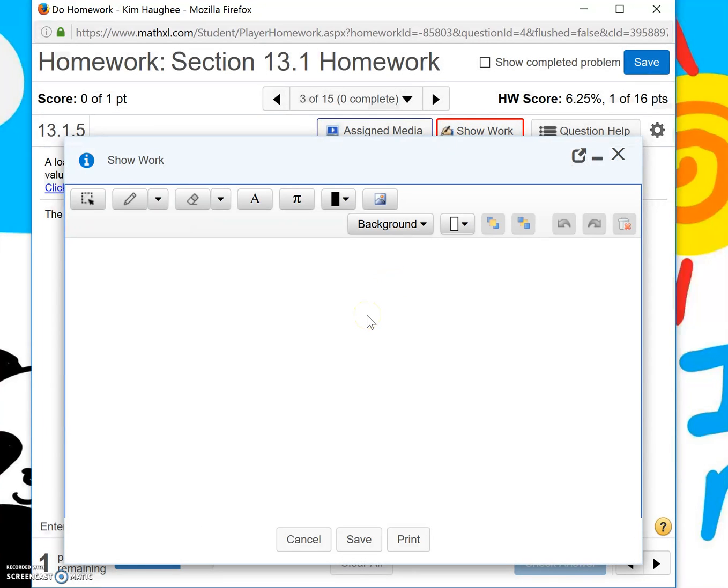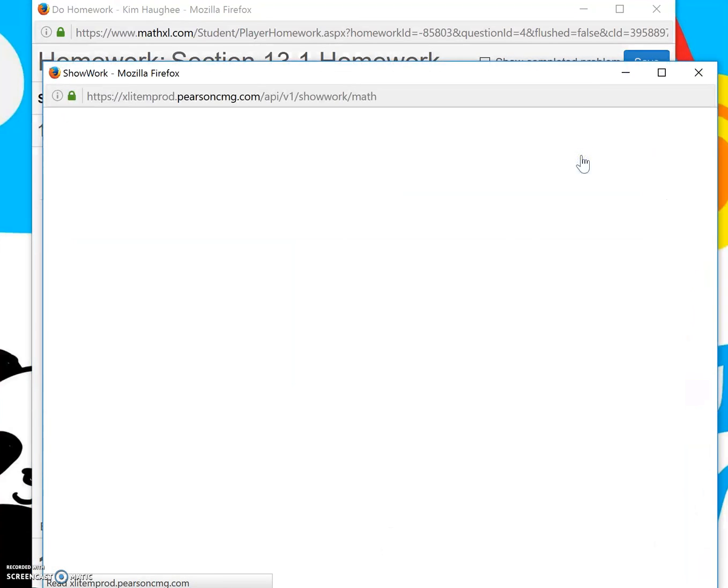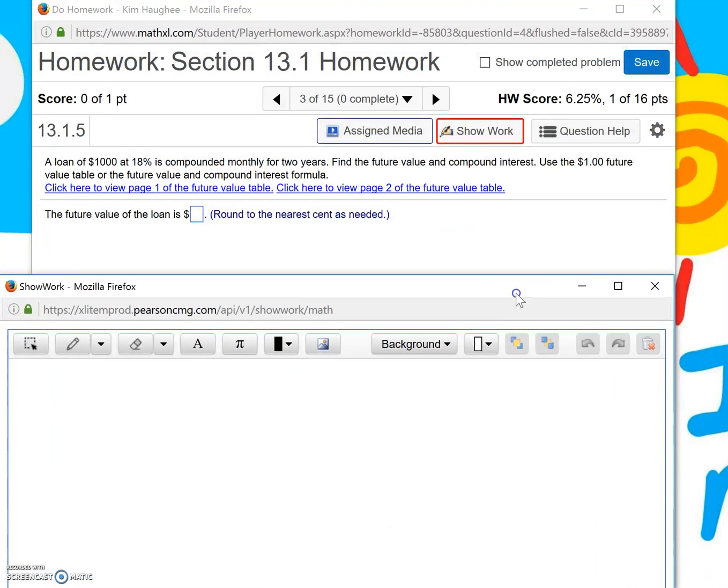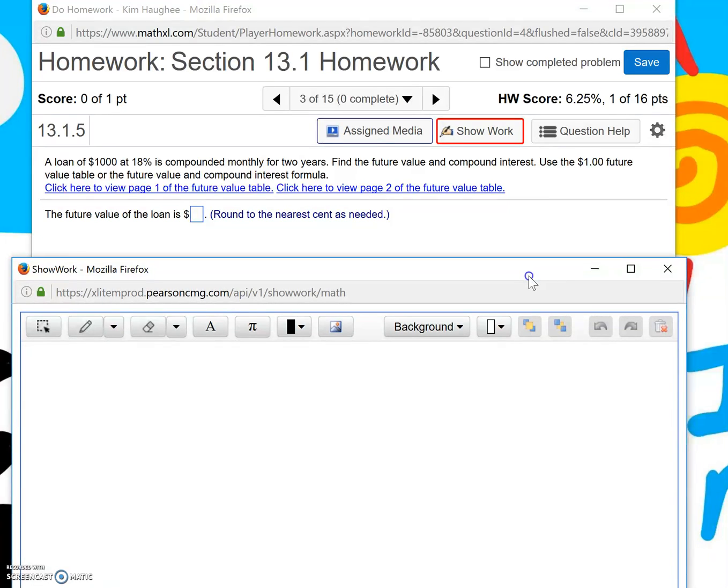A pop-up window will appear that can make it difficult to see the problem. To move this window, in the upper right-hand corner there's a box with an arrow pointing to the right. Click on that and it'll create its own window so you can move it around and actually view the problem you're working with.